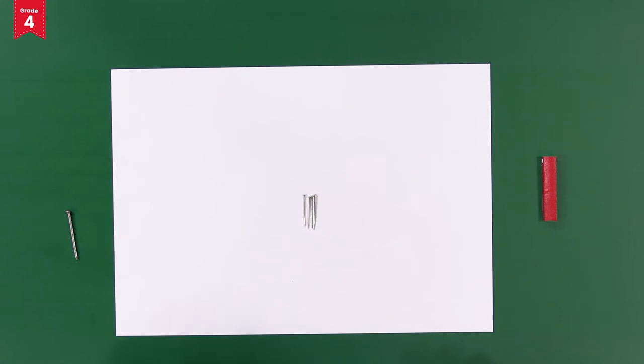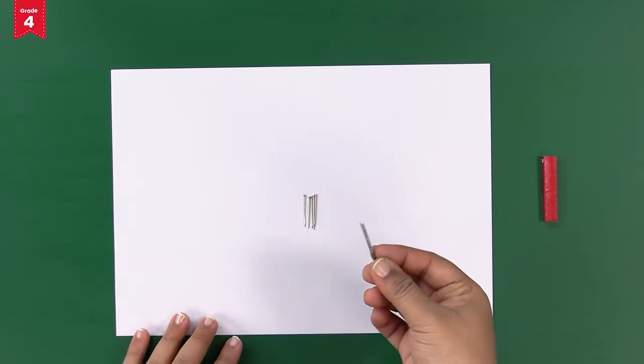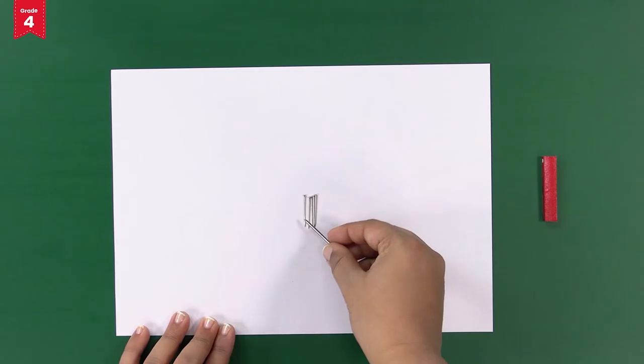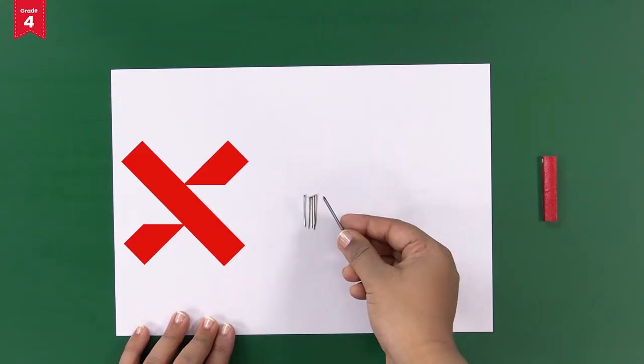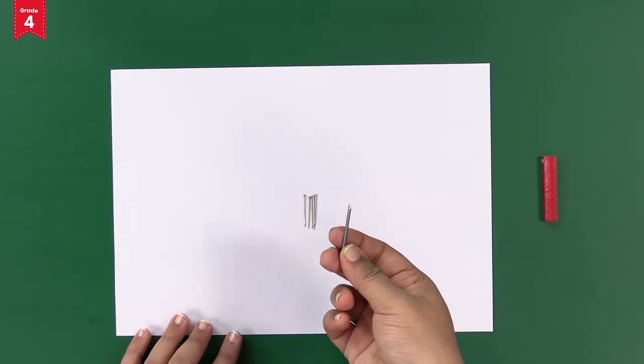Let's test whether the iron nail attracts them or not. Bring the iron nail closer to all the pins and check. No, it does not attract, right? Let's convert this into a magnet now. Are you ready?